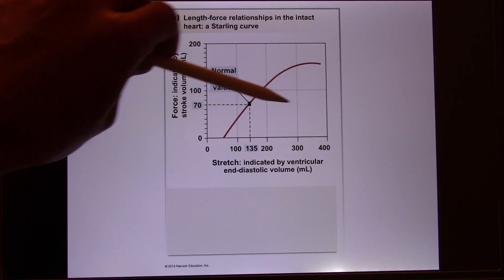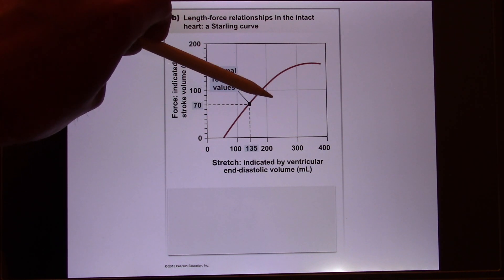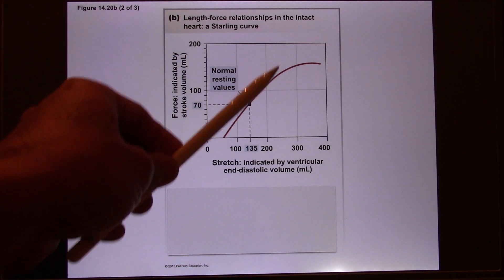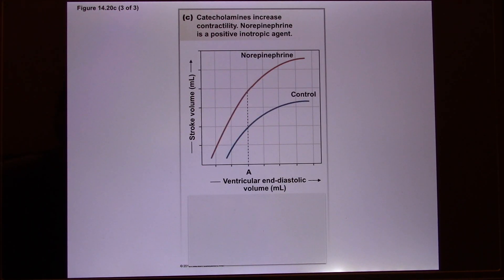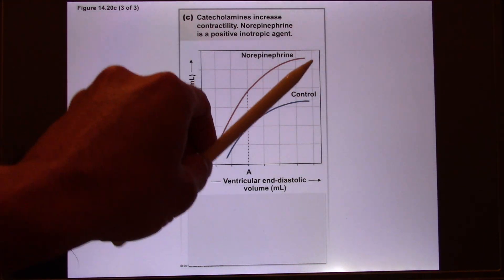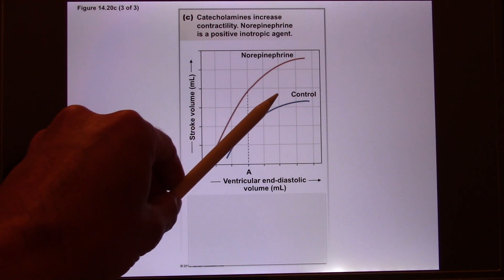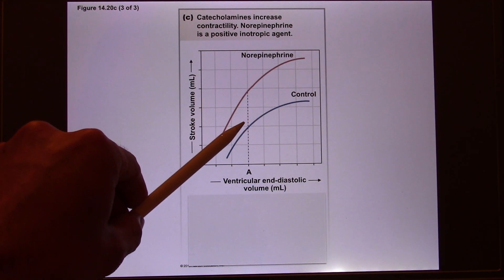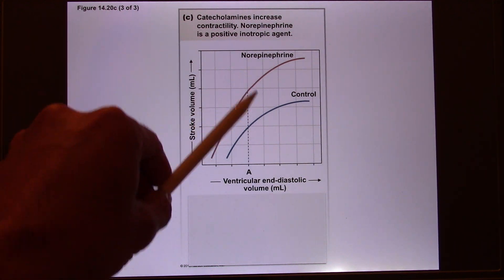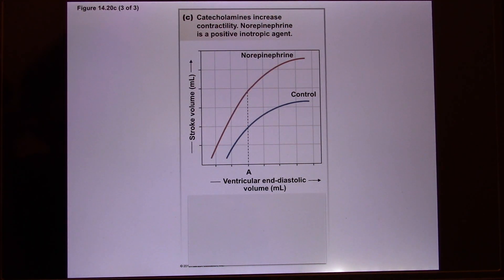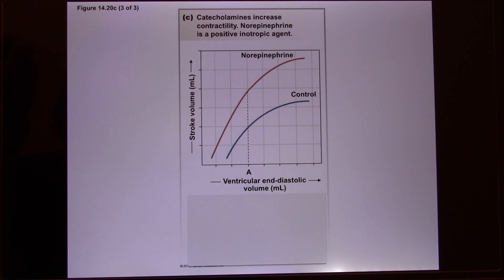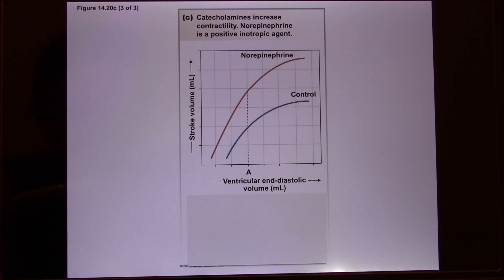This tells you that when you exercise, you increase the end-diastolic volume and increase contracting force — the heart loves to work. Even better, your autonomic nervous system releases norepinephrine, which shifts the whole line up. Without norepinephrine, it's already a linear relationship — more blood in, more blood out. With norepinephrine, contracting force is increased even further. Because of this, your autonomic nervous system can quickly increase cardiac output in an emergency situation, within seconds.